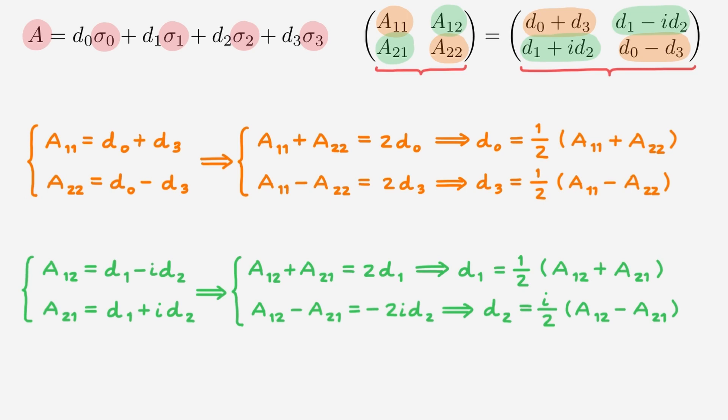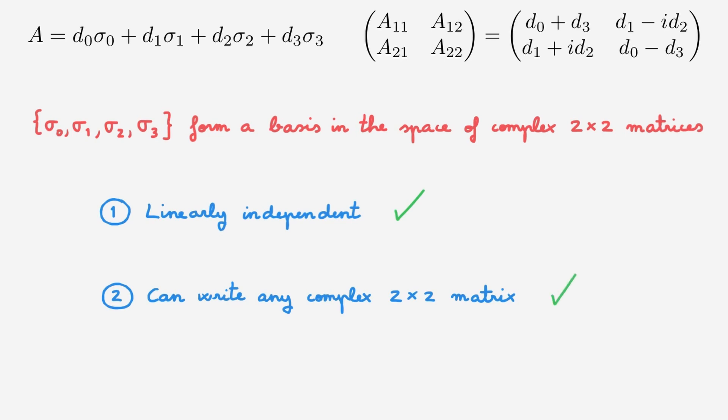And that's it. For any matrix A, we can write it as a linear combination of the identity matrix and the Pauli matrices by choosing the expansion coefficients using these four expressions for d0, d1, d2, and d3. In the most general case, these expansion coefficients are complex numbers. We've now also proved the second condition, and therefore we can conclude that these four matrices do indeed form a basis for the space of complex 2x2 matrices. This result is extremely useful, because the Pauli matrices are a very convenient set of matrices to work with in quantum problems involving a two-dimensional state space, with perhaps the most famous example being the description of spin angular momentum in spin one-half particles like the electron.